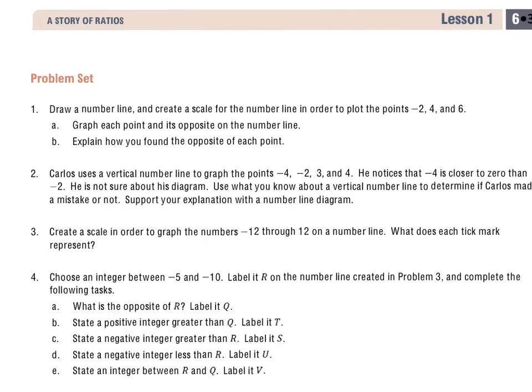So we're going to take a look at a few different questions on here. I'm going to start with question 1. And it states, draw a number line and create a scale for the number line in order to plot the points negative 2, 4, and 6. So the first thing I'll do is I'm going to create a scale for this one. So I'm going to actually draw my number line on here, and I'm going to mark off 0 right in the center. And then I see that I have negative 2, 4, and 6.